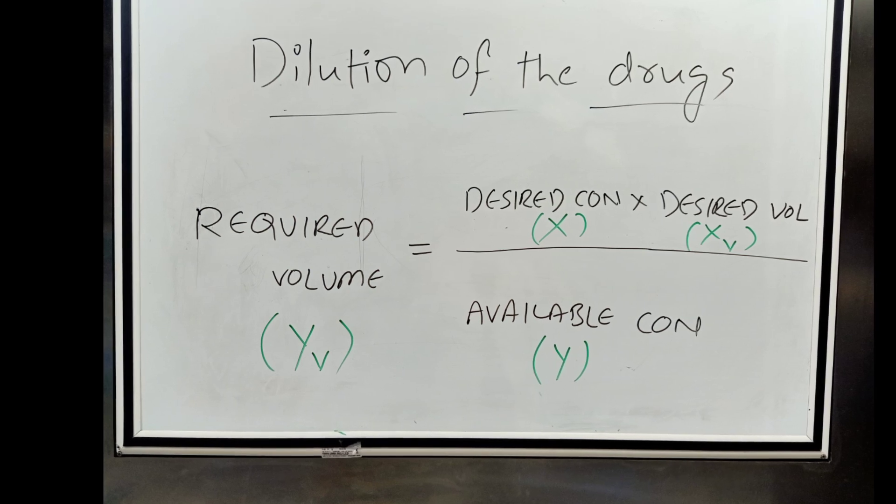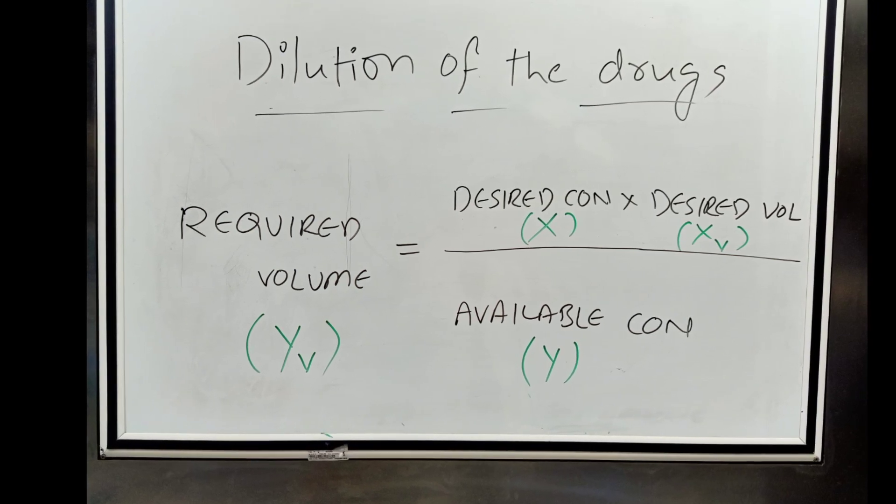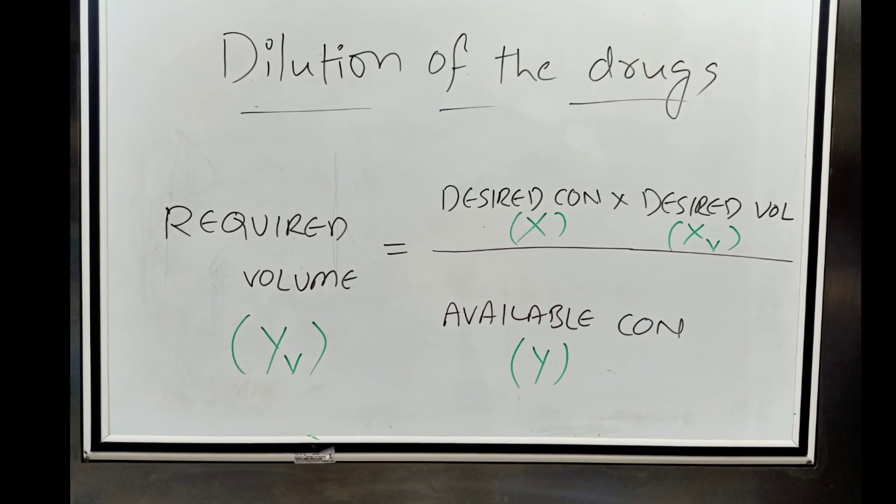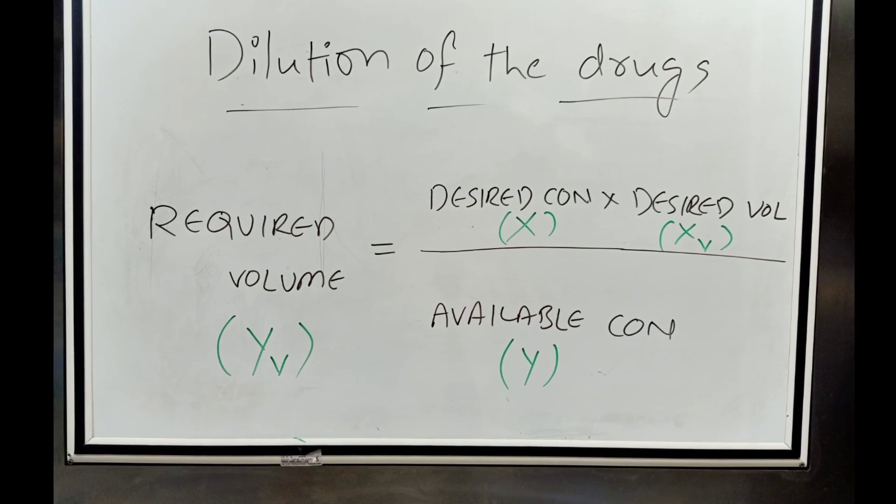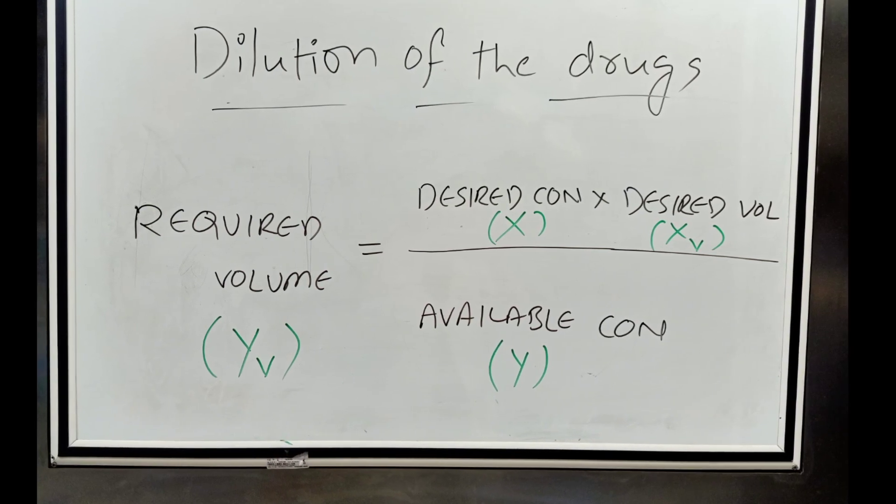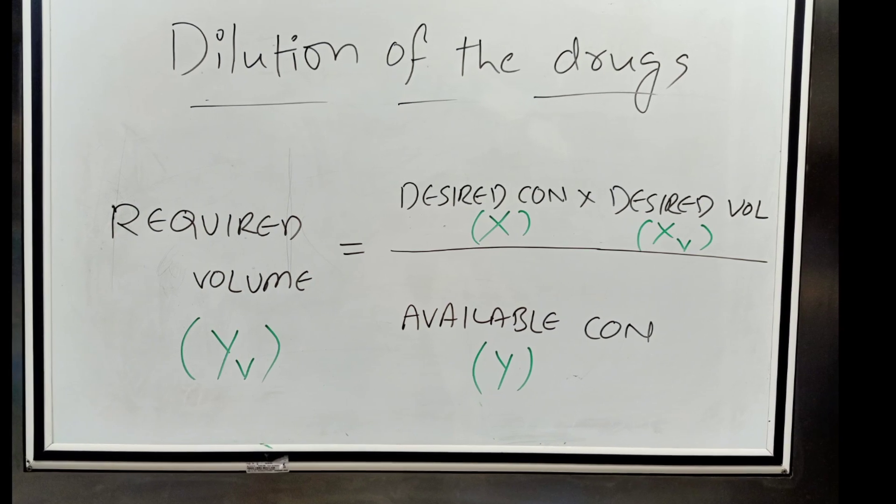So here volume will be in milliliters. All that we need here is required volume, that is YV, which equals X multiplied by XV divided by Y.